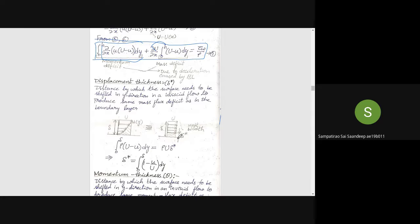For viscous case, at delta you will get it as U (strictly speaking 0.99U but I can approximate that as U). For inviscid case, by how much distance delta star should I move this plate up so that I'll get the same mass flux deficit? So I can get delta star as integral from 0 to delta (1 - u/U)dy. This is one important formula.